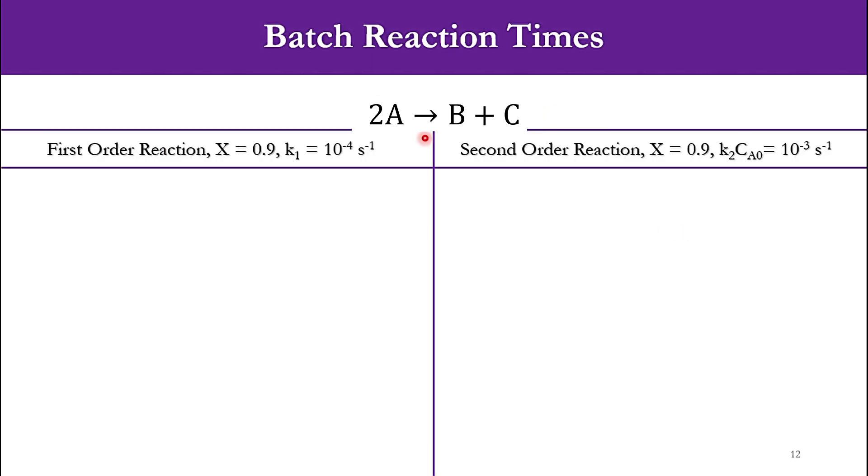Now let's assume we've been given X equals 0.9 for both cases. k₁ equals 10⁻⁴ per second, while k₂CA0 is 10⁻³ per second. Let's solve: TR equals 1/k₁ times ln(1/(1-X)). X is 0.9, k₁ is 10⁻⁴. Accordingly, TR equals 23,000 seconds or 6.4 hours.